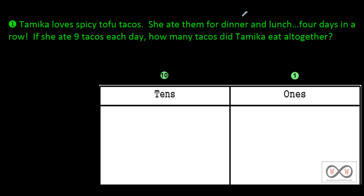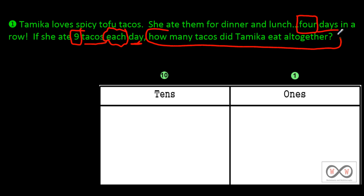She ate them for dinner and lunch four days in a row. Did you catch that? There's our first math clue — important math information. Next sentence: if she ate nine tacos each day, that's nine tacos — important math information. 'Each' is an important word. She ate nine tacos in each of those four days. So we have nine tacos each day for four days, and here comes our math job right here at the end in the form of a question: how many tacos did Tamika eat altogether?